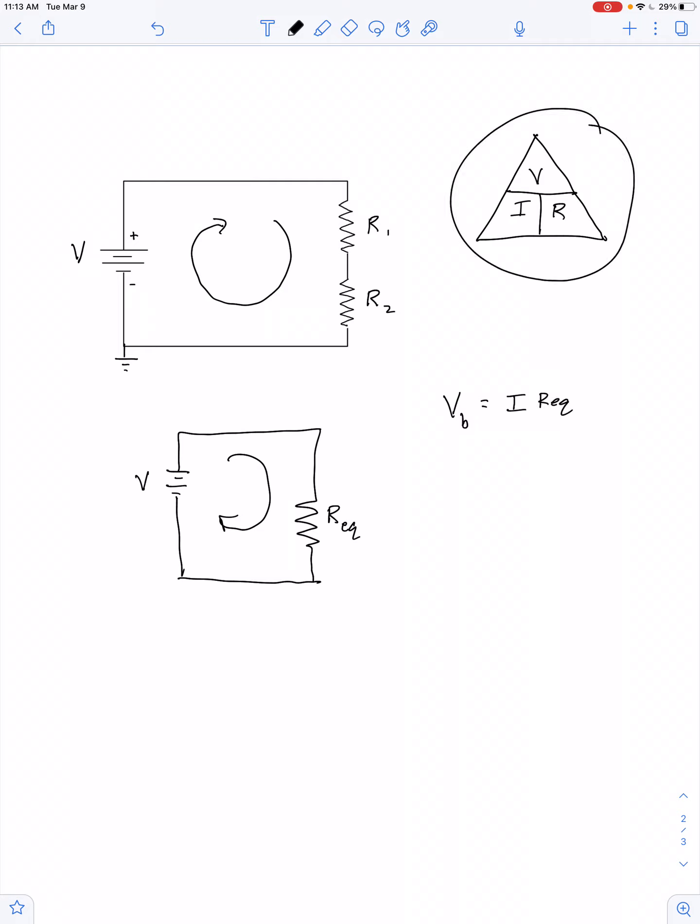Ohm's law is also true in parts. So, if I were to take a voltmeter and just connect it across resistor number one in an attempt to find the value of V1, well, V1 should be equal to this current I times the value of R1. And likewise, I could hook the voltmeter across resistor number two, and it should be true that V2 is equal to I times R2.